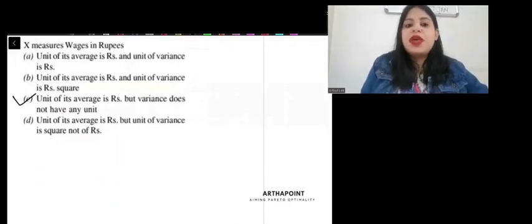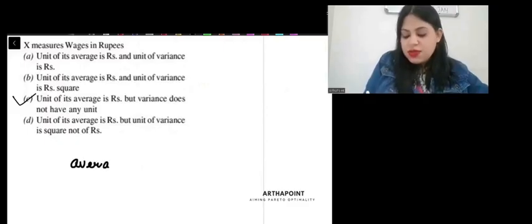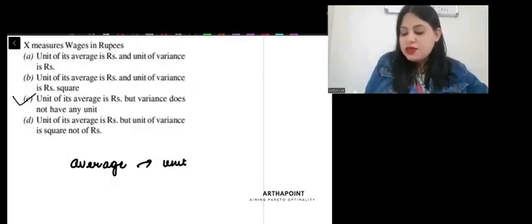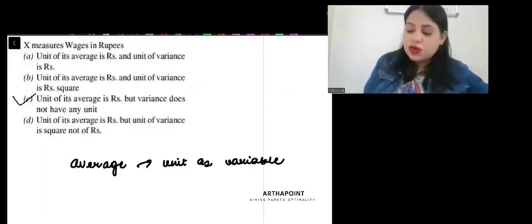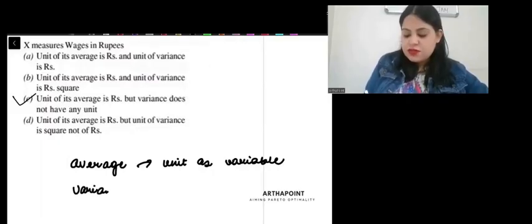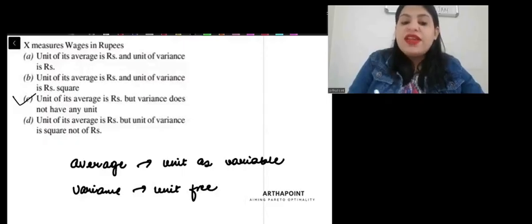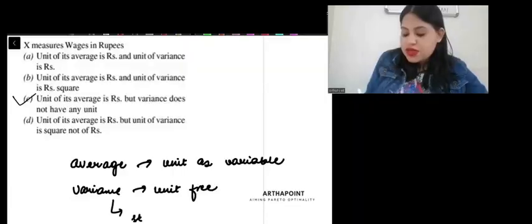Come to the next question. X measures wages in rupees. Then, unit of its average is rupees and unit of variance is rupees. Let's think about this. Please understand that whenever you find average, mean, median, mode, it is in the same unit as variable. But whenever variance, standard deviation, these you calculate, it is unit free. It is not affected by the unit. So, variance is unit free.